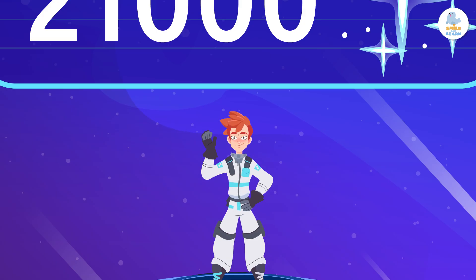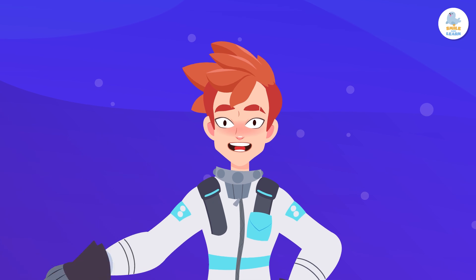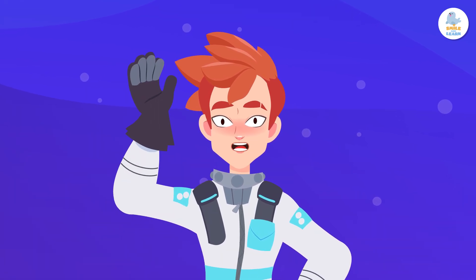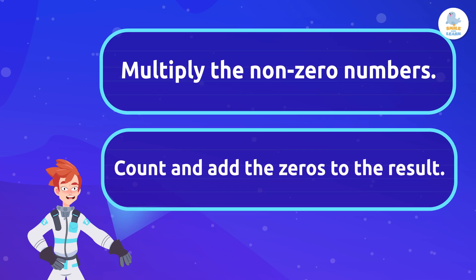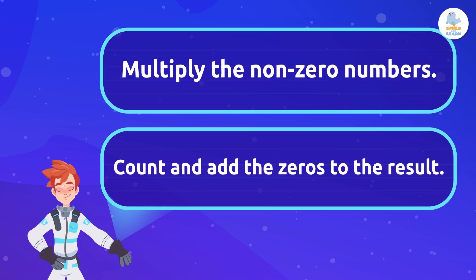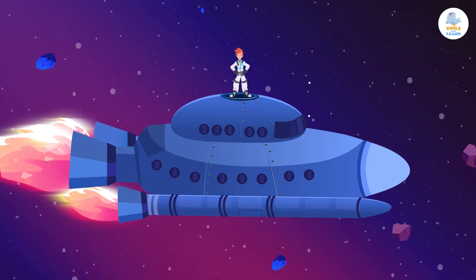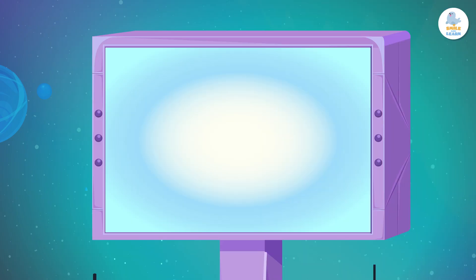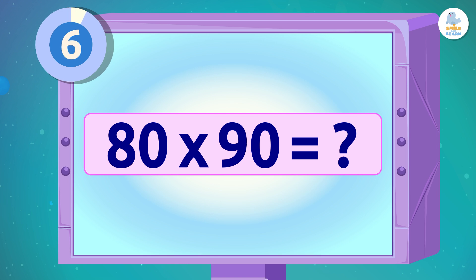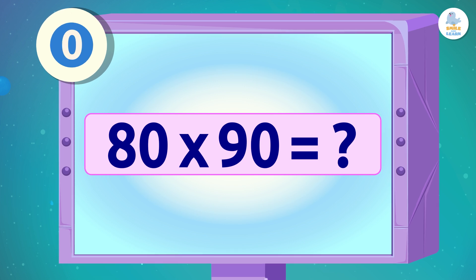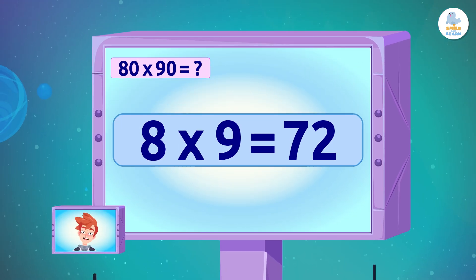If you remember these two steps you will be able to solve this type of multiplication problem easily. First, we multiply the non-zero numbers. Then we count and add the zeros to the final result. Easy, isn't it? Let's do some examples to practice. What is 80 times 90?